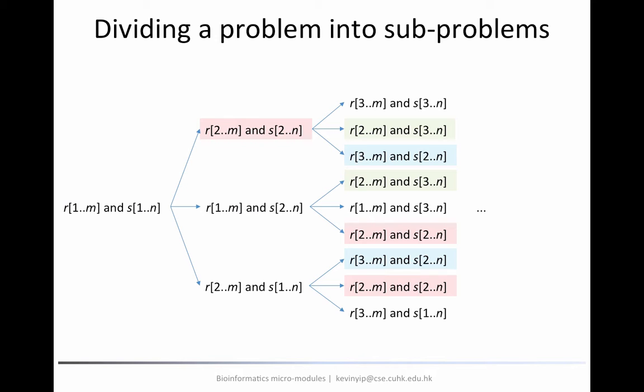The second possibility is we put s1 into the first column of the alignment and a gap from r. The third possibility is we put r1 and a gap from s. For each of these sub-problems, if it is simple enough, then we solve it right away. But if it is still too difficult, we can repeat the same process to decompose it into three sub-problems, and do that again and again until we reach a problem that is very easy to solve.